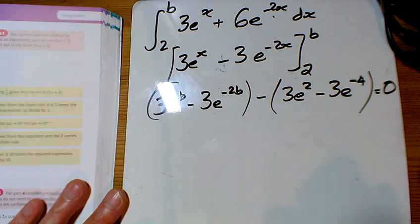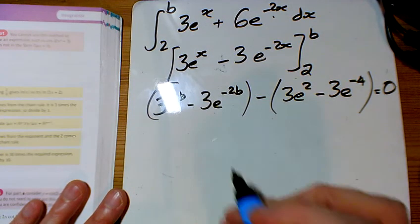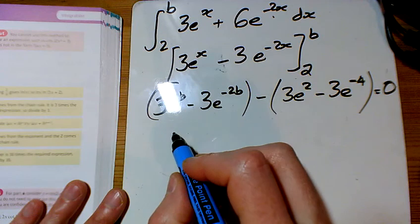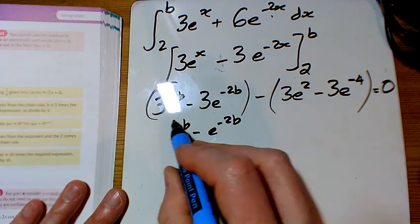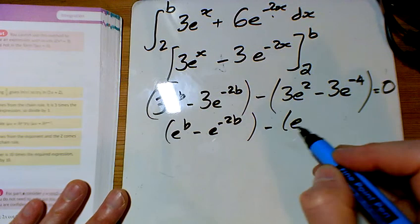Now I'm just staring at this going, this is a weird question. Clearly we'll divide everything by 3, and we get left with e^b - e^(-2b) - (e^2 - e^(-4)) = 0.